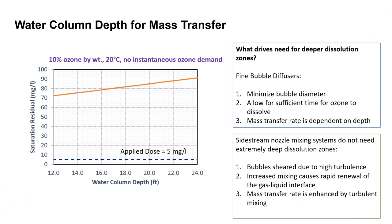Let's look at the required water column depth for mass transfer. Do we really need deep basins? What is the rationale? With fine bubble diffusers we generally assume we need deep basins because we want to minimize the bubble diameter and allow for sufficient time for the ozone to dissolve. The mass transfer rate tends to be dependent on the depth so it's not even. With side stream mixing systems, the bubbles are constantly sheared due to high turbulence and mixing and this increased mixing causes a rapid renewal of the gas liquid interface. So the mass transfer rate is enhanced by turbulent mixing. There's something to think about when it comes to do we really need the 22 or 24 feet of water column for ozone dissolution.